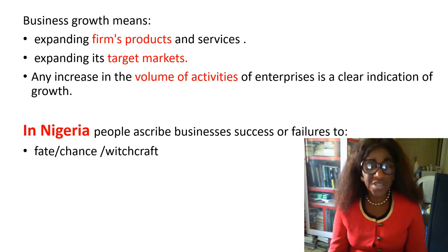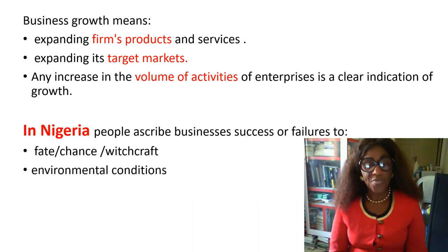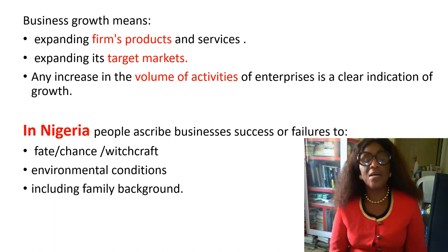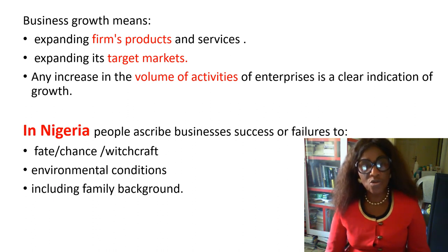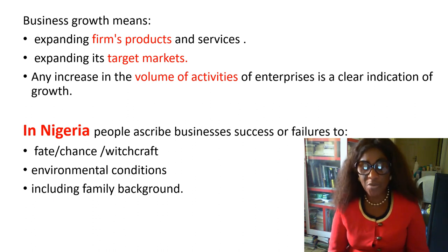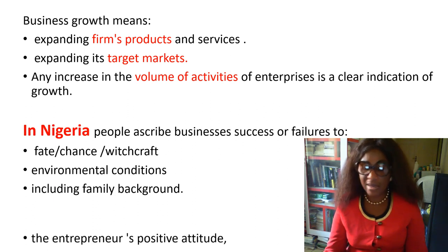The success and failure of a business is within the hands of the entrepreneur. There are environmental conditions that do not permit a business to grow in certain environments, and there are also family background issues. People from a family with a business tradition tend to do better — they have heard and seen successes and failures and are more stable than those without any background.